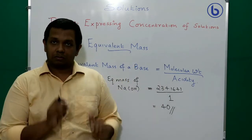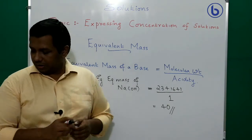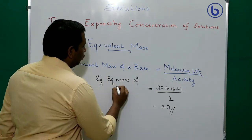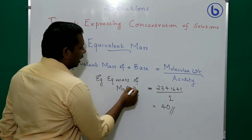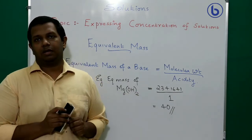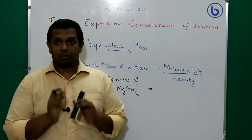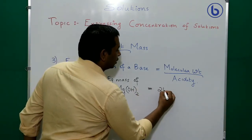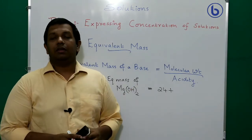Example 2: equivalent mass of magnesium hydroxide, Mg(OH)₂. Magnesium has valency 2 and OH has valency 1, which is why the formula is Mg(OH)₂. Magnesium's atomic number is 12, so its atomic mass is 24.